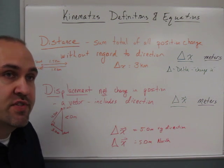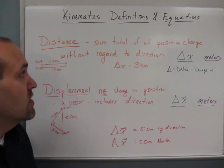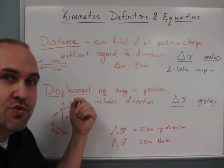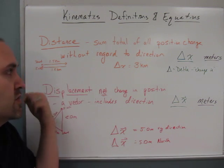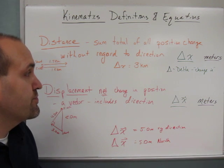Distance we can define as the sum total of position change without regard to direction. So for example, if you walk 1.5 kilometers to school and 1.5 kilometers back, that means you've walked a distance of three kilometers.